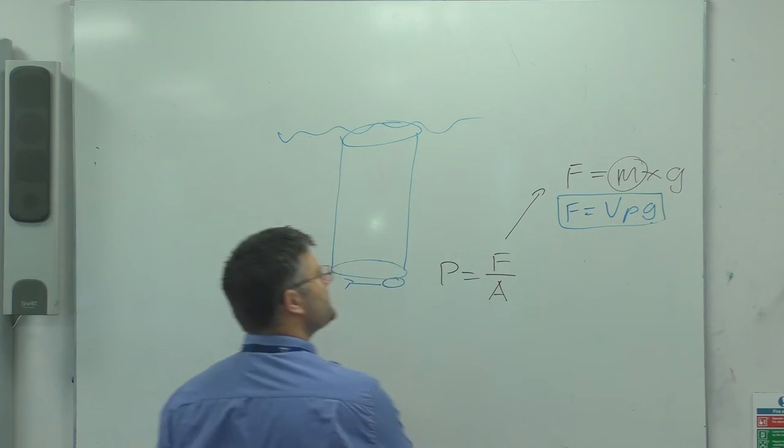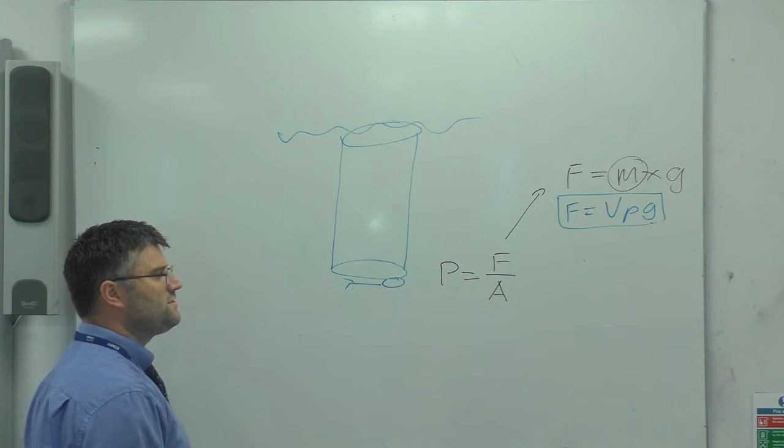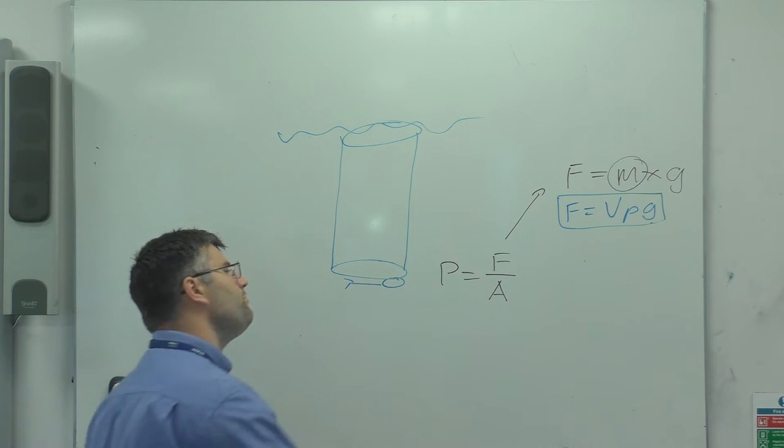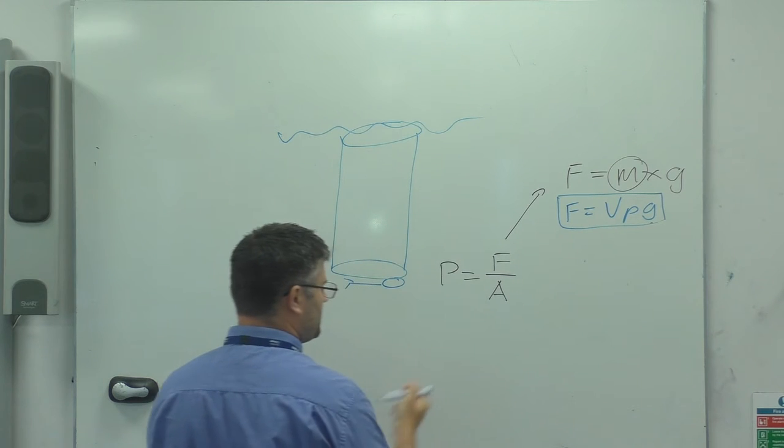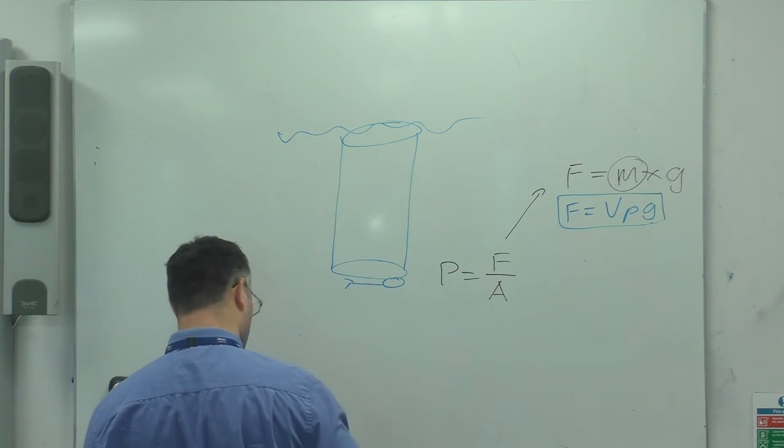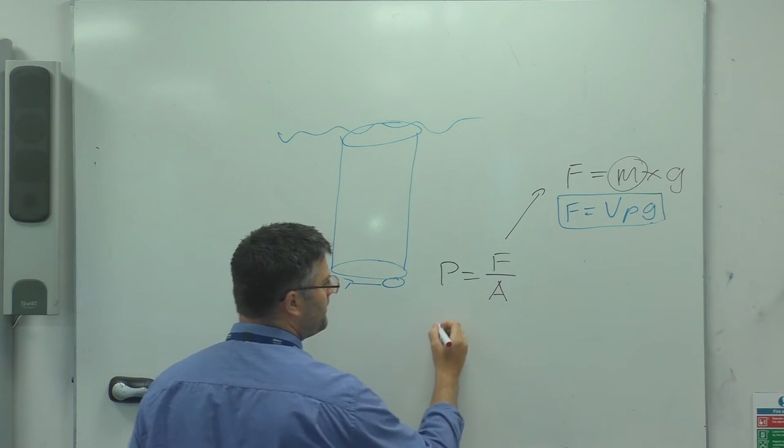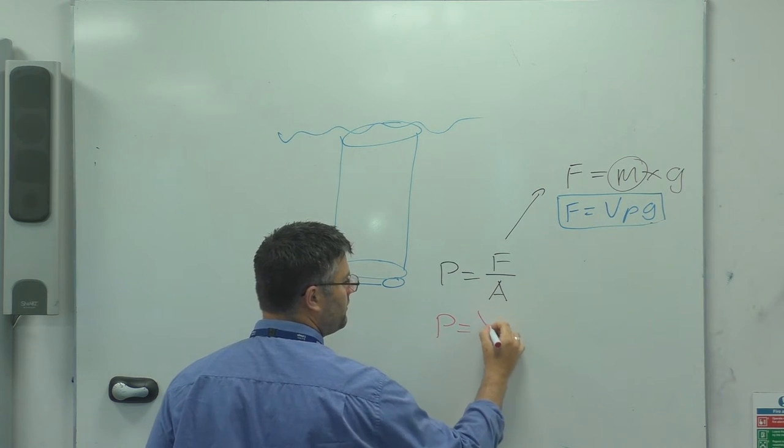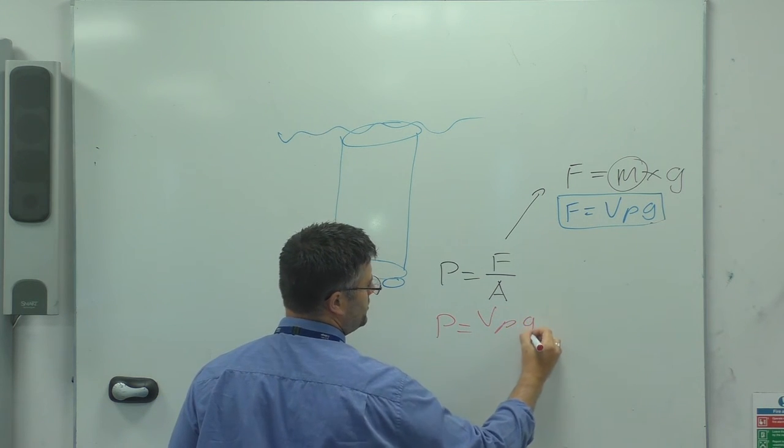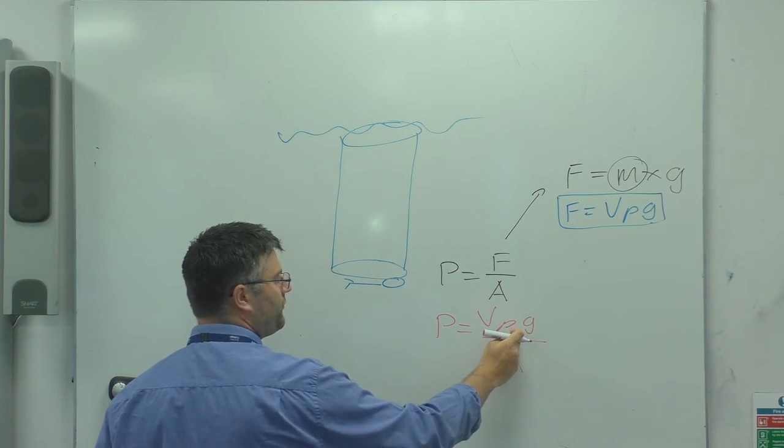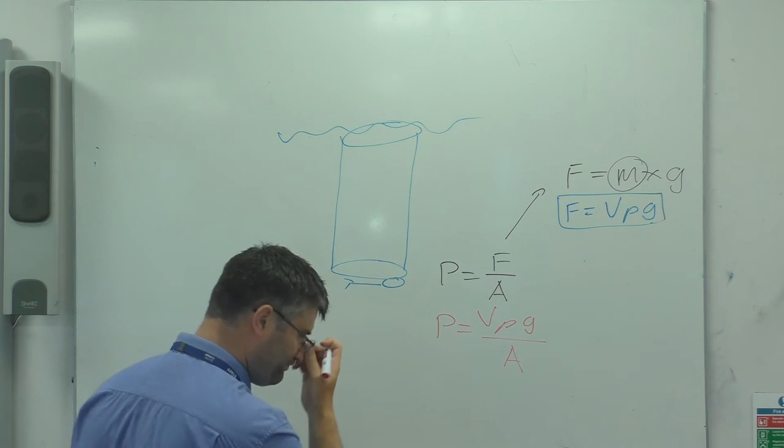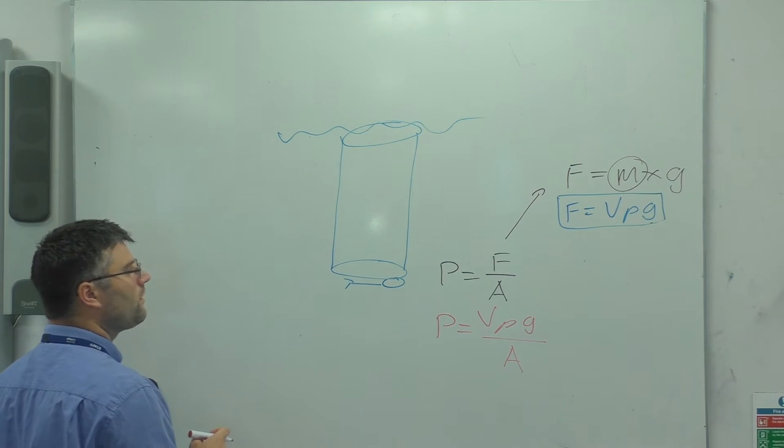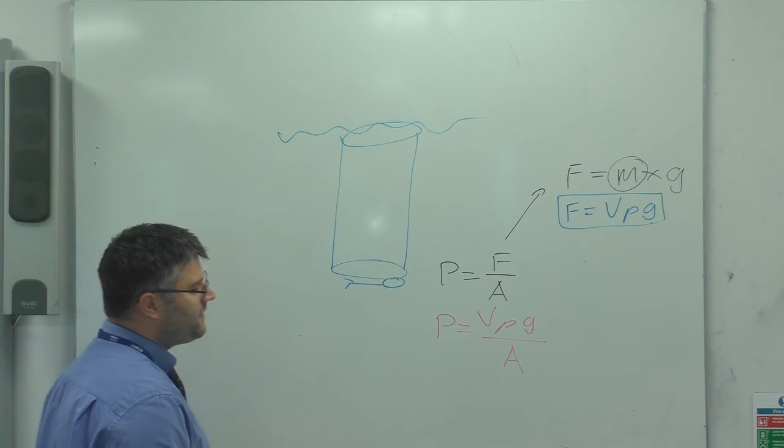Okay, so I've got a value for F that's V rho G and I can actually input that now into this equation to get the new one all together. So pressure is equal to V rho G over A because that's force divided by area. Right, okay, so where do we go from here?